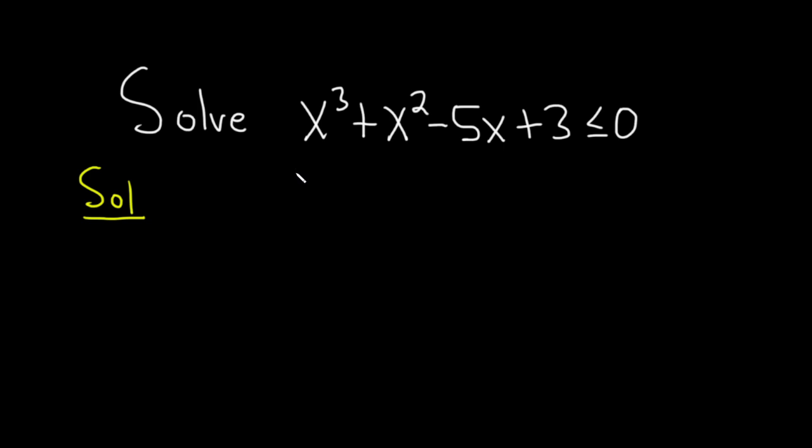Let's check to see if 1 is a zero. And why 1? 1 is always just a good one to check because usually 1 and negative 1 are good ones. So we have 1³ + 1² - 5(1) + 3. Basically, we're just adding the coefficients. If you add the coefficients and you get 0, then 1 is a zero. So this will be 2 - 5 + 3. So this is 0. So 1 is a zero.